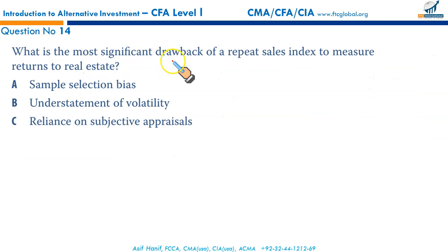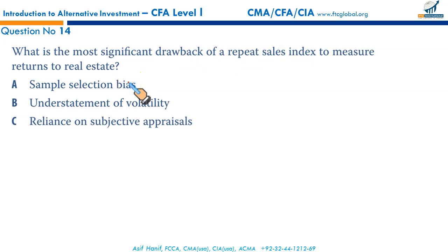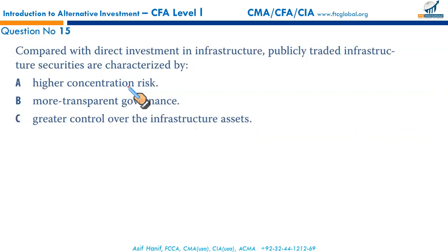What is the most significant drawback of a repeat sales index to measure returns to real estate? Sample selection bias — yes, a significant drawback. The properties that sell in each period vary and may not be representative of the overall market the index is trying to cover. That makes A the correct option.